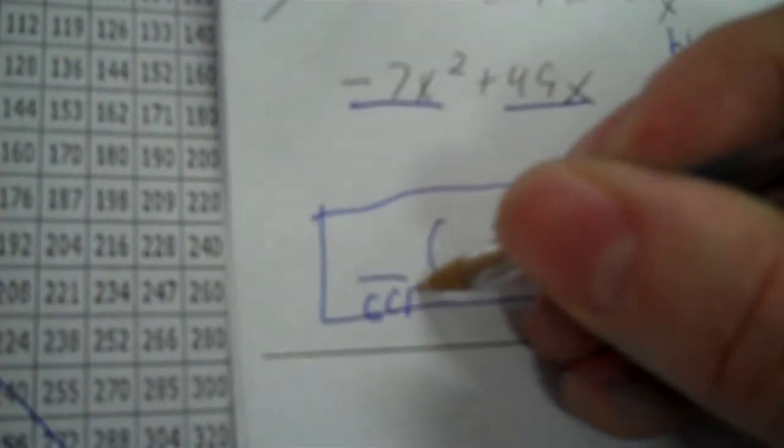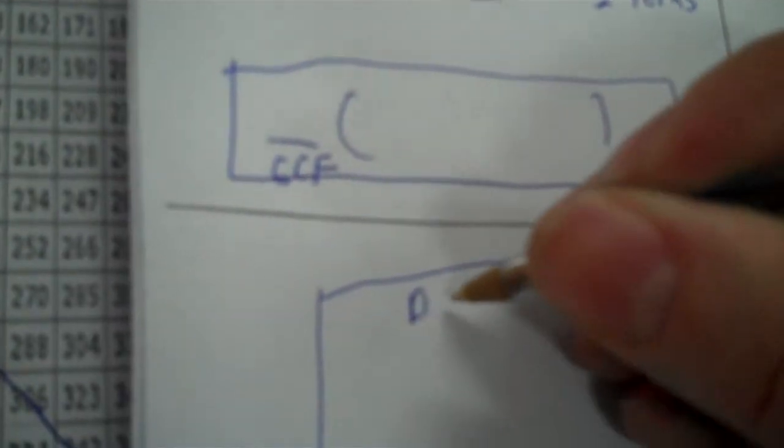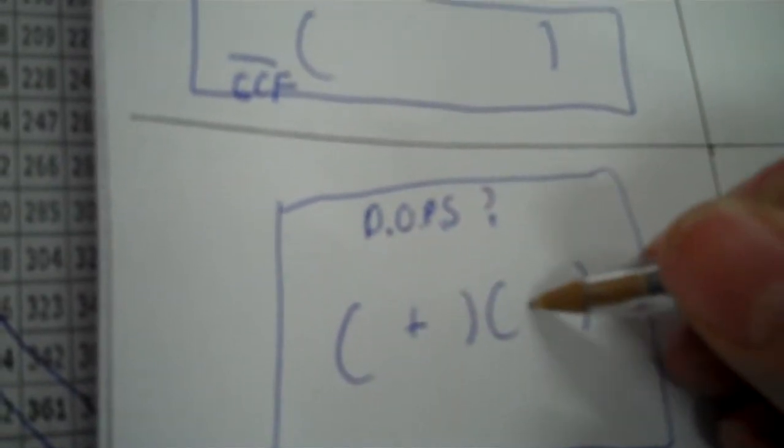This is what we did in the last assignment. DOPS — difference of perfect squares — question mark. If it is, we make two parentheses with a plus and a minus. Check your last term for a variable — it's there, so you take the x. Check your first term for the negative symbol — it's there, so you factor out a negative. Then between the negative and the x, look at 7 and 49 — they're both in the 7 times table, so divide by negative 7x since that's the GCF.